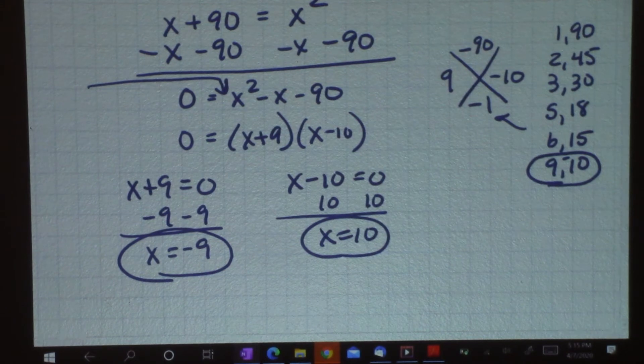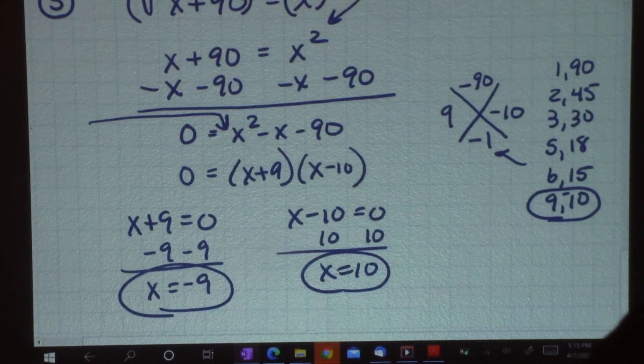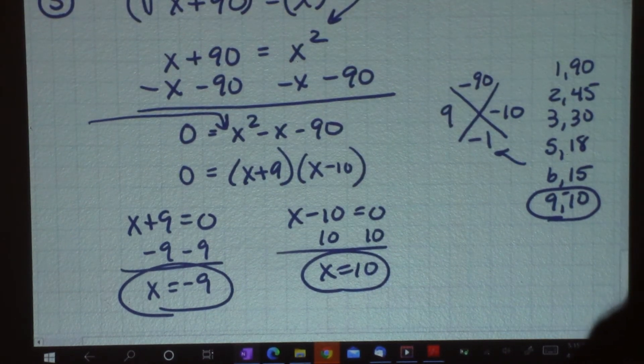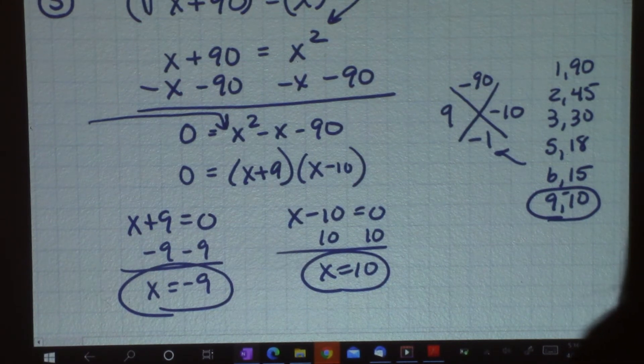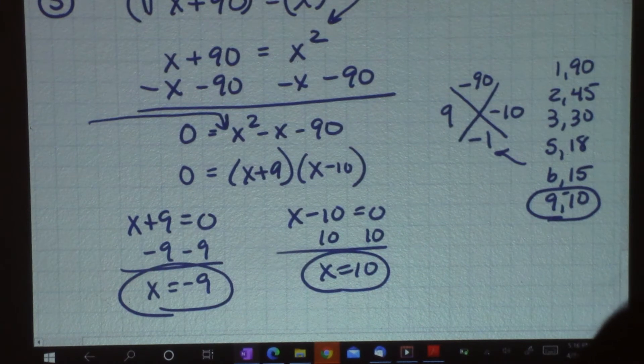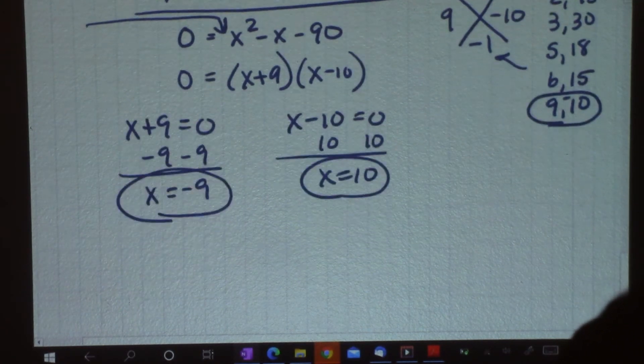I did not use bottoms up because I have a one for a coefficient in front of the x squared. So now I could put x plus nine and x minus 10, and I set them both equal to zero. So I get x equals negative nine and x equals 10. So I have two answers and I should check that to make sure it works. Let's come back to that in a minute.